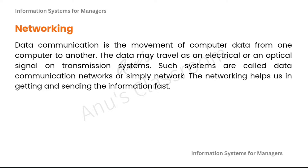Networking — what is it? Data communication is the movement of computer data from one computer to another, and the data may travel as an electrical or an optical signal on our transmission systems. Such systems are called data communication networks, or simply networks, and this networking helps us in getting and sending information fast.